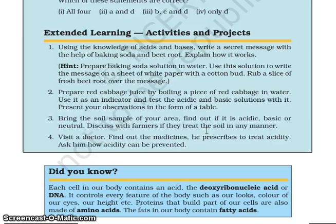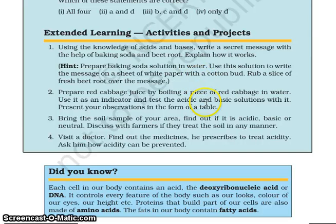Extended learning — activities and projects: using the knowledge of acids and bases, write secret messages with the help of baking soda and beetroot, and explain how it works. Prepare red cabbage juice by boiling a piece of red cabbage in water; use it as an indicator and test acidic and basic solutions with it — present your observations in the form of a table. Bring a soil sample from your area and find out if it is acidic, basic, or neutral — discuss with farmers if they treat the soil in any manner. Visit a doctor and find out the medicines prescribed to treat acidity, and ask how acidity can be prevented.